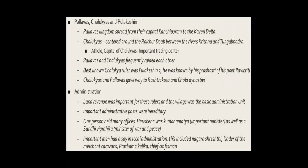Pallavas, Chalukyas, and Pulakesi's Prashasti. The Pallavas and Chalukyas were the most important ruling dynasties in South India during this period. The kingdom of the Pallavas spread from the region around their capital, Kanchipuram, to the Kaveri Delta, while that of the Chalukyas was centred around the Raichur Doab, between the rivers Krishna and Tungabhadra. The capital of the Chalukyas, Aihole, was an important trading centre and developed as a religious centre with a number of temples. The Pallavas and Chalukyas frequently raided one another's lands, especially attacking the capital cities. The best-known Chalukya ruler was Pulakesi II. We know about him from a Prashasti composed by his court poet, Ravikirti. This tells us about his ancestors, traced back through four generations from father to son.